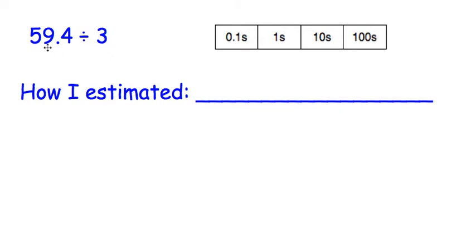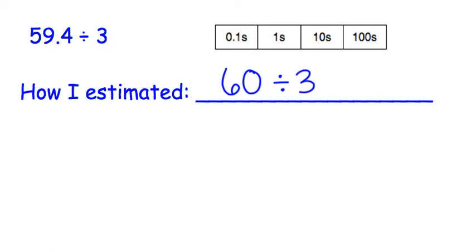Our first problem is 59 and 4 tenths divided by 3. The closest whole number we could round 59 and 4 tenths to would be 60. So we're going to round that up to 60. We're going to divide this second number into 60 as long as it's a nice friendly number. We know that 3 can easily go into 6, so I'm going to leave that as 3. I'm not going to round it because it's already a friendly whole number.